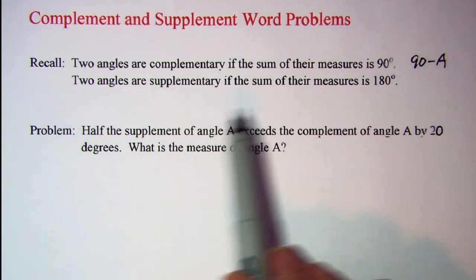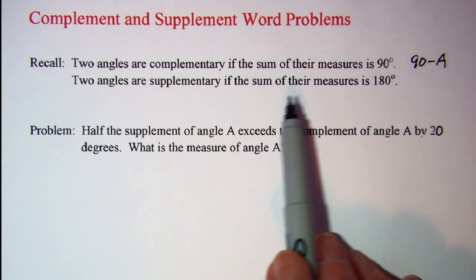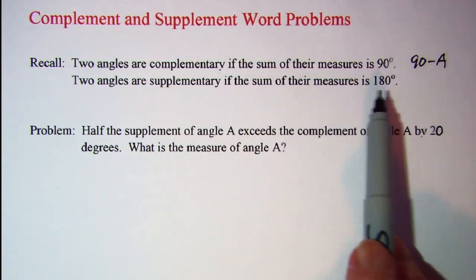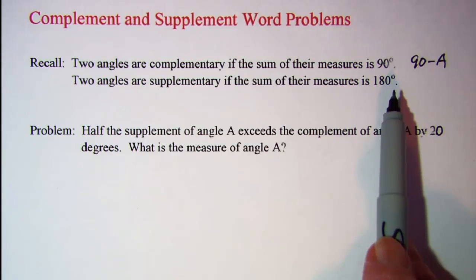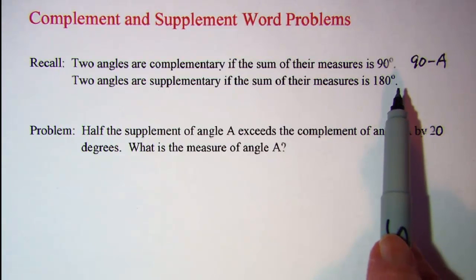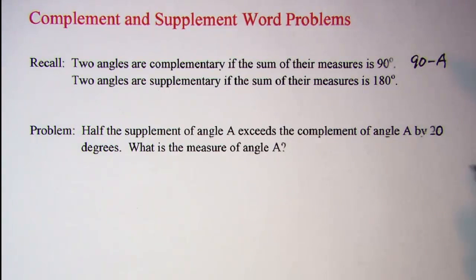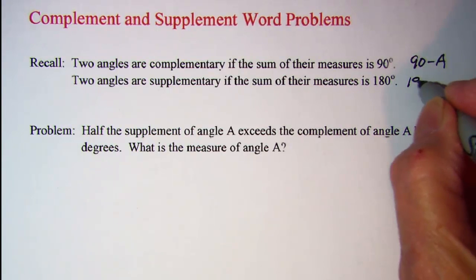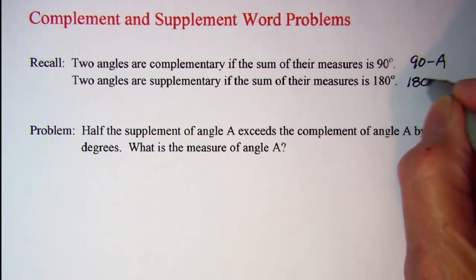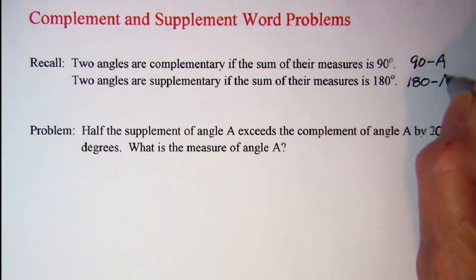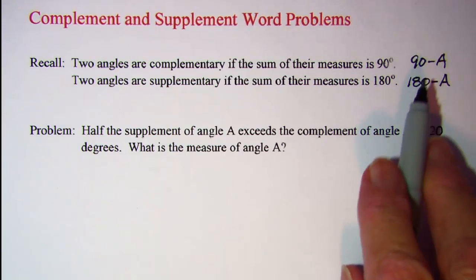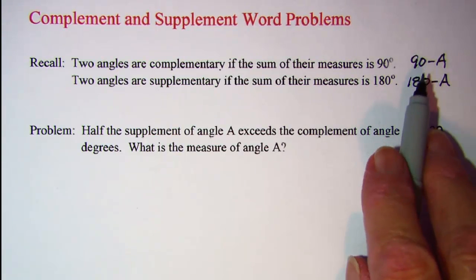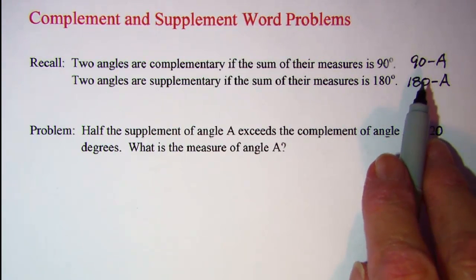Two angles are supplementary if the sum of their measures is 180 degrees. So if we know angle A's measure then the supplement's measure will be 180 minus A. We'll use these two formulas when we translate word problems.